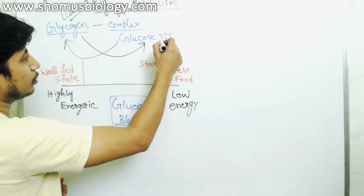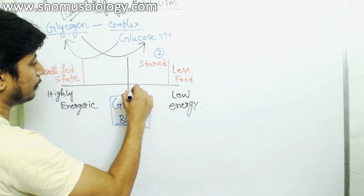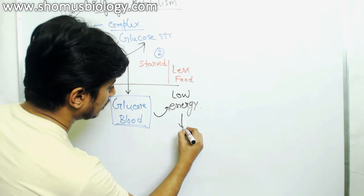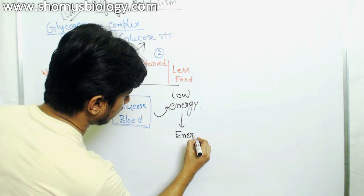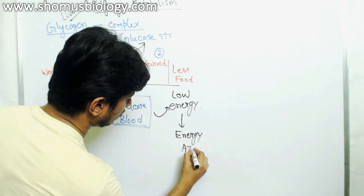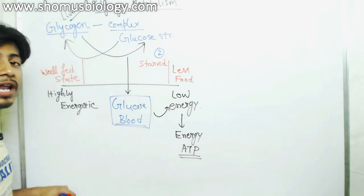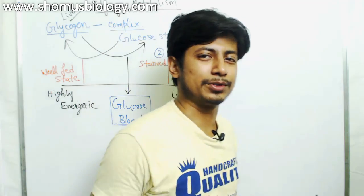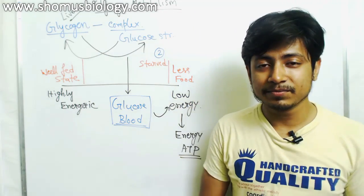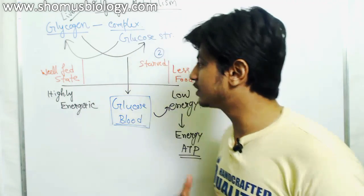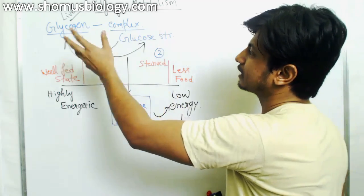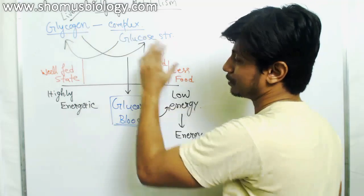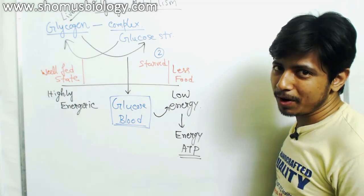Glucose is again released into the blood, and the body takes glucose from the blood to produce enough ATP for energy. So this is a cycle that continues between the well-fed state and the starved state — either converting glucose into glycogen or breaking down glycogen into glucose based on our requirements.